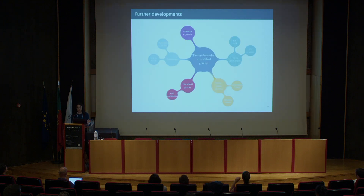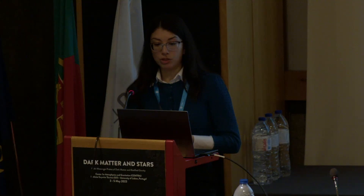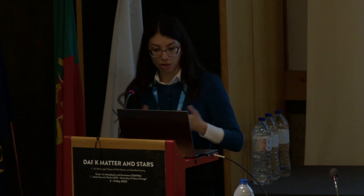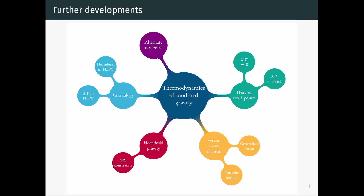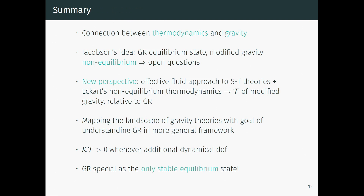There are several developments that this can lead to. If we generalize this framework to Horndeski theories — the most general scalar-tensor theories — we find that this analogy only works for viable Horndeski theories, specifically only in the case where the speed of gravitational waves is equal to c. This is interesting because this analogy seems to point also in the direction of the physical constraints. Thank you for your attention.